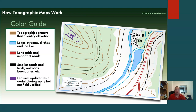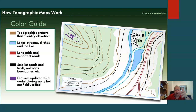Smaller roads, trails, railroads, and boundaries are going to be in black. Purple will show features updated with aerial photography but not field verified — so it's been updated because they could find it on aerial photography, but somebody hasn't actually gone there to verify it. You'll also notice white and green. Green is any places where you have large amounts of vegetation, whereas white areas are going to be developed areas.